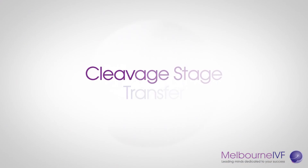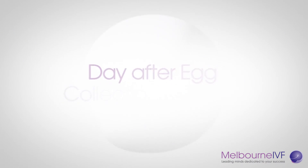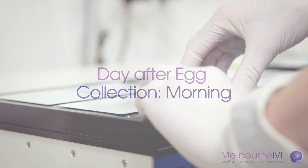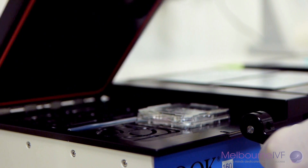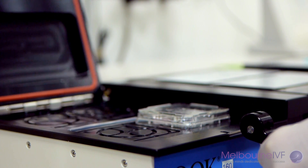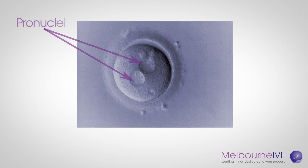Cleavage stage transfer. The day after egg collection — morning. In the early hours after fertilisation, the egg begins to display two pronuclei in the centre, one from the male and the other from the female. These are observed under the microscope at this time to confirm that fertilisation has taken place.